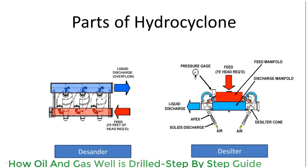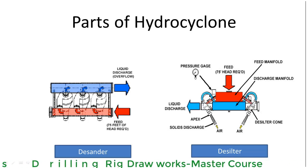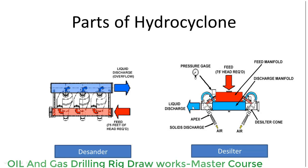This path shows the feed going inside the cone. Solids are being discarded at this point, whereas the fluid containing the lighter solid particles exits from this path into the common discharge manifold. From this manifold, the mud or liquid containing light solid particles is discharged and going to the active system.